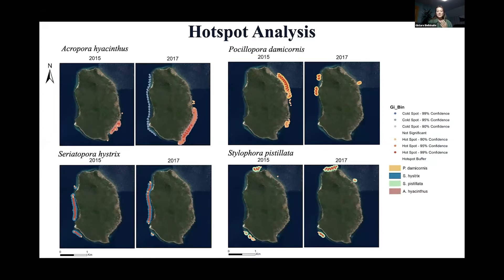These shifts in community composition clearly suggest that the system I'm looking at is still in its infant stages of ecological succession, with pioneering species still dominating the reef on the exposed side of the island that was way more affected in the 2011 cyclone.